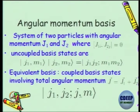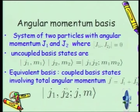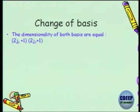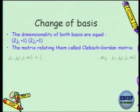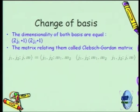What is the range of J? There are constraints — the dimensionality of both the uncoupled basis and the coupled basis must be equal. The matrix which relates them is the famous Clebsch-Gordan matrix. It is called the CG coefficient matrix, and you can insert an identity operator.